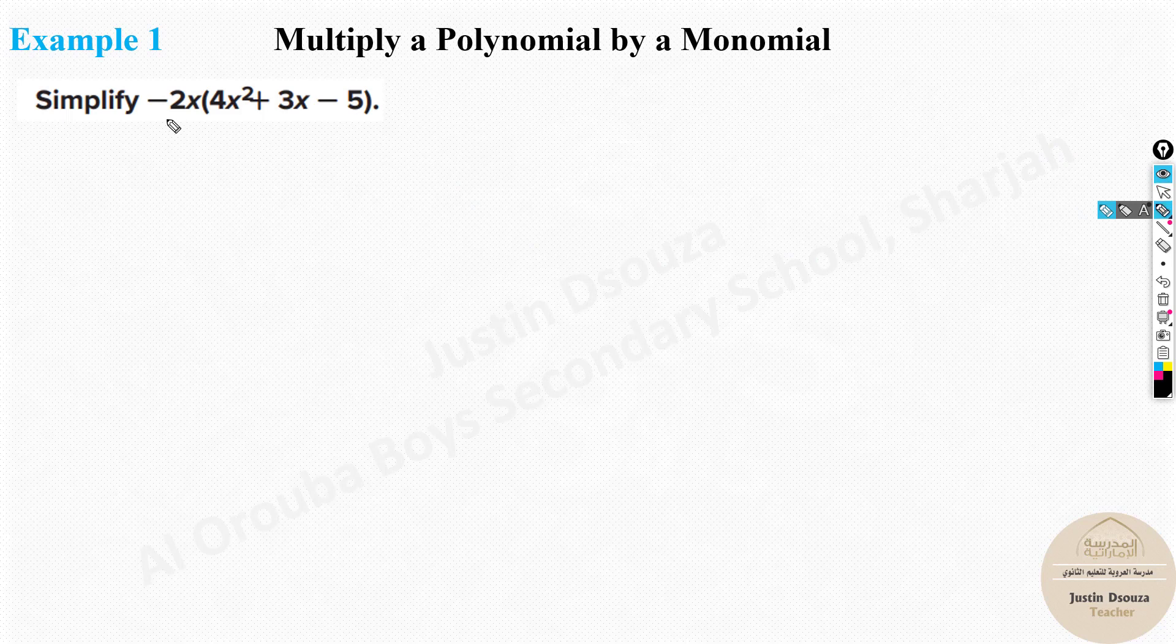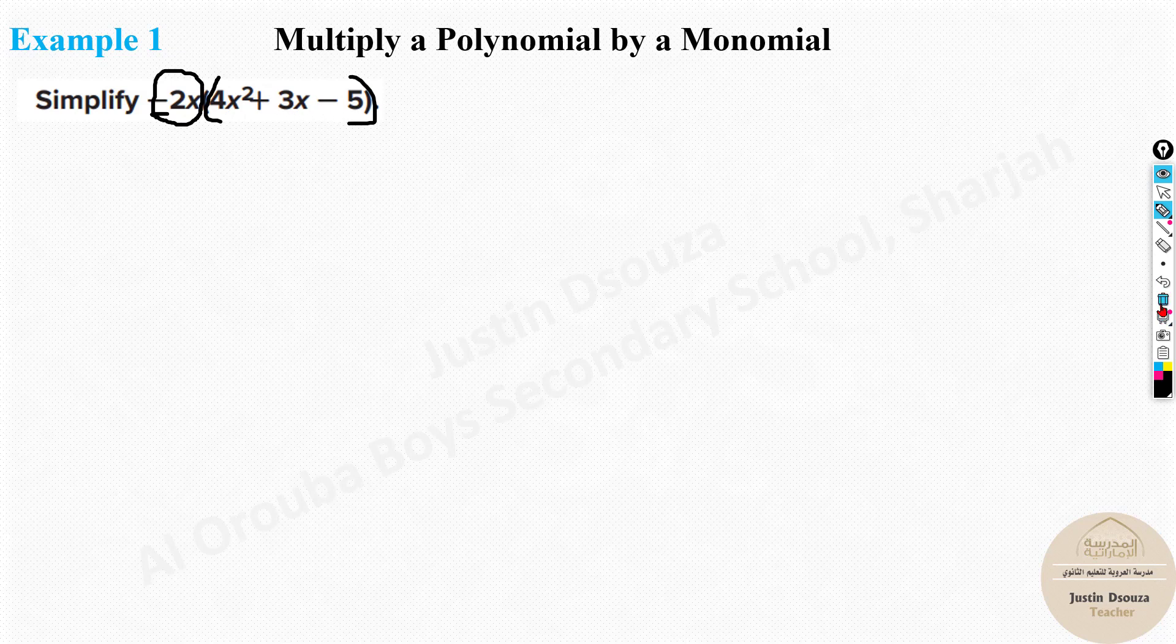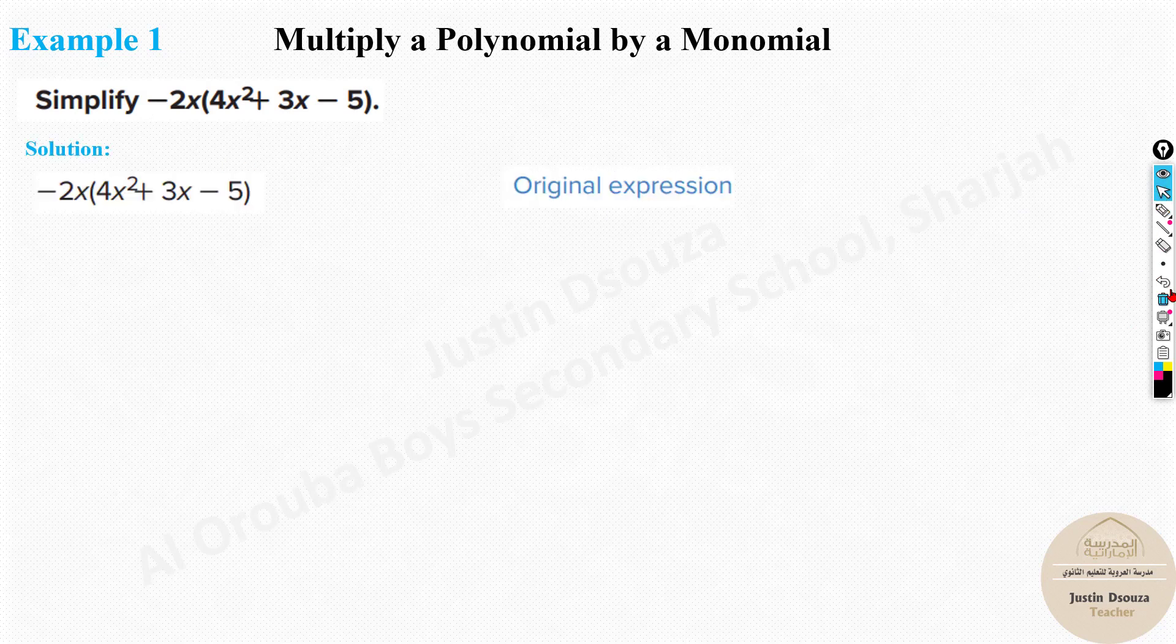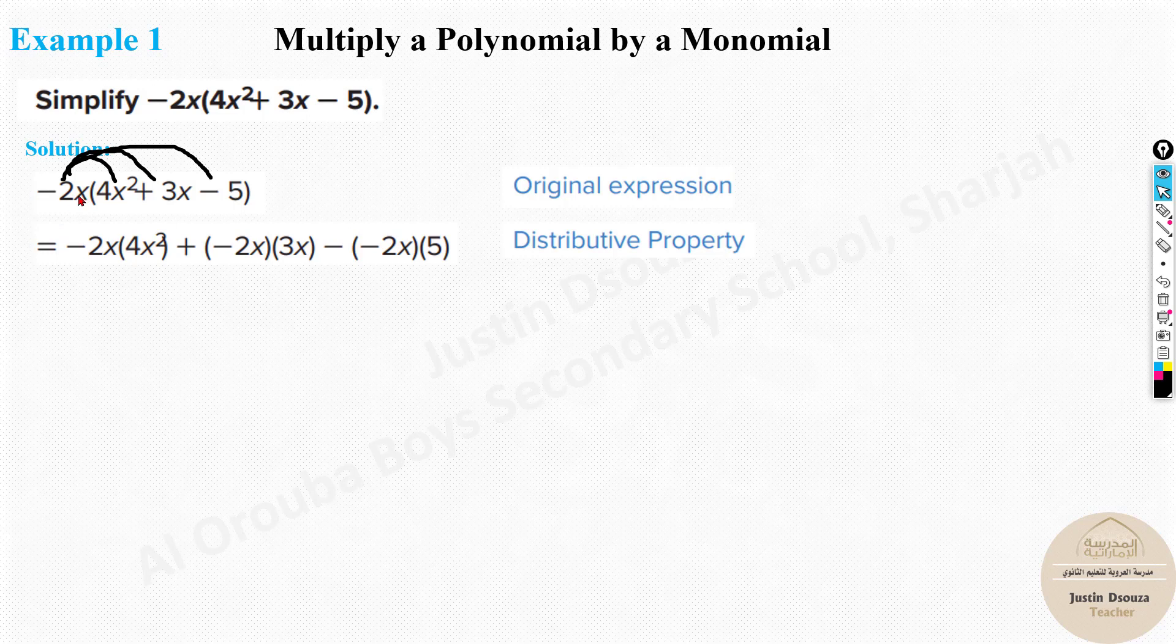Here we have, you can see, minus 2x is multiplied with 4x squared plus 3x minus 5. This is a trinomial, minus 2x is a monomial. All you need to do is a distributive property. That means you need to multiply this over here, here and over here. So you will have negative 2x times 4x squared plus negative 2x times 3x negative 2x times 5.